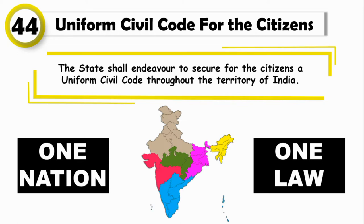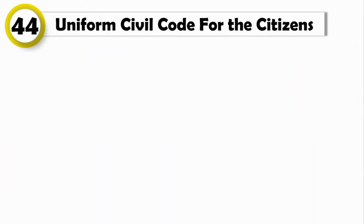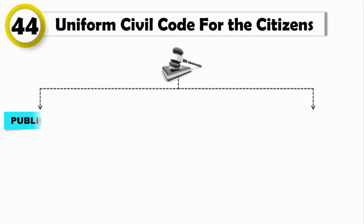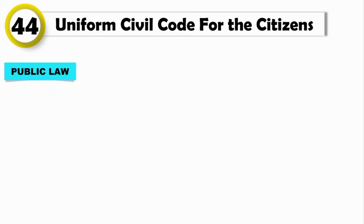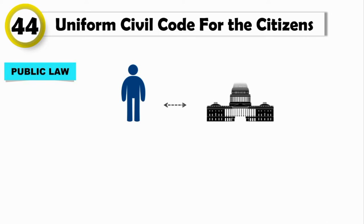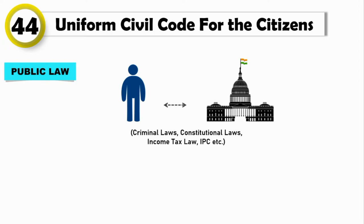To understand Uniform Civil Code, we first need to understand law. The two basic categories of law are Public Law and Private Law. Public laws are those laws which regulate individual versus state relations and which are directly concerned with the society. For example, criminal laws, constitutional laws, income tax law, IPC (Indian Penal Code), etc. These are the laws which are common to all throughout the territory of India.